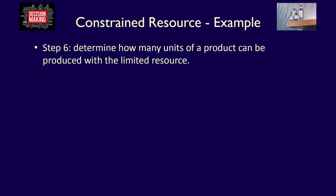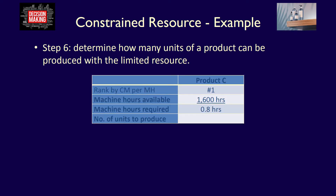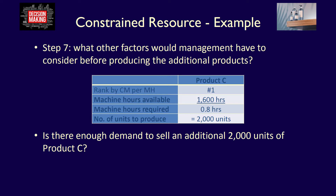How many additional units of product C could the company produce? We calculate that by dividing the total limited resource available by the limited resource required to produce one unit of the product. We take the total additional machine hours available — 1,600 — and divide by the 0.8 machine hours required to produce one unit of product C, which allows us to produce an additional 2,000 units of product C. Those 2,000 units of product C would generate $200,000.